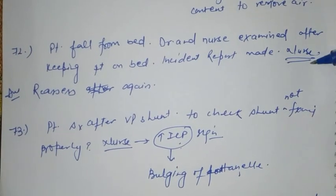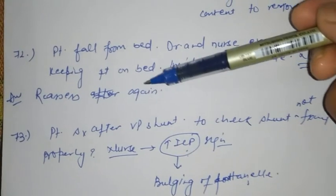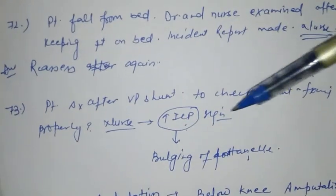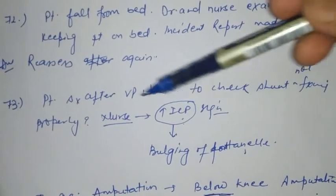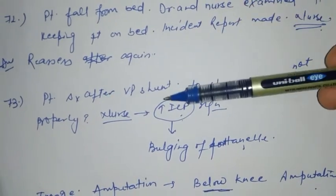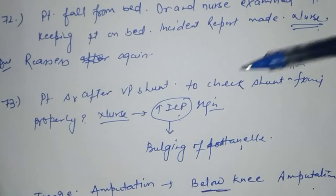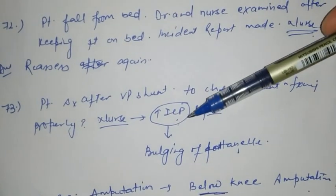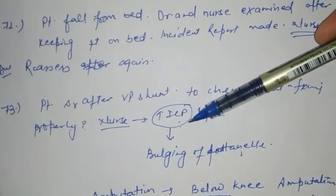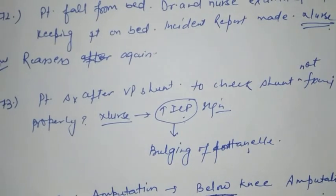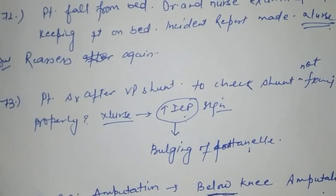Next question: a patient falls from the bed. The doctor and nurse examine the patient and find no injury. The nurse has written the incident report. What is the next responsibility of the nurse? To again reassess the patient.